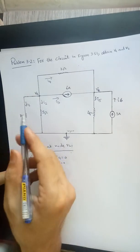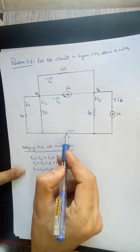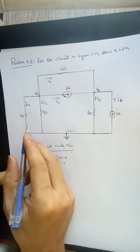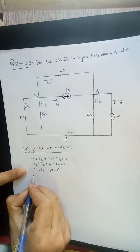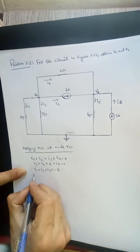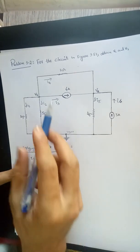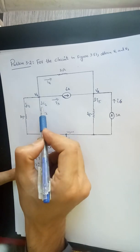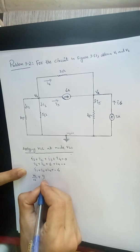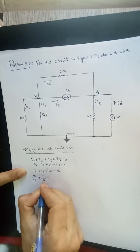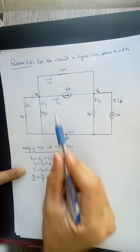So what is I1? I1 is basically V1 minus V3 that is 0 divided by 10. So we can say V1 divided by 10 plus I2. I2 is V1 minus 0 divided by 5, so we can say V1 divided by 5 plus I4. I4 is V1 minus V2 divided by 2.